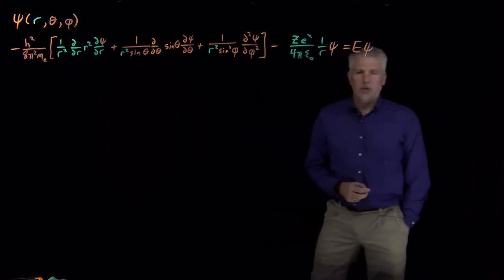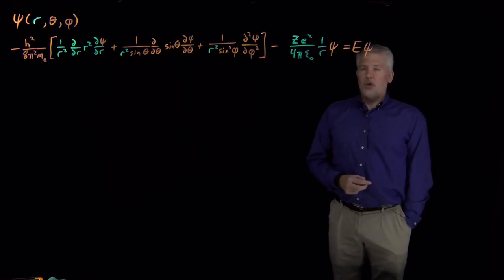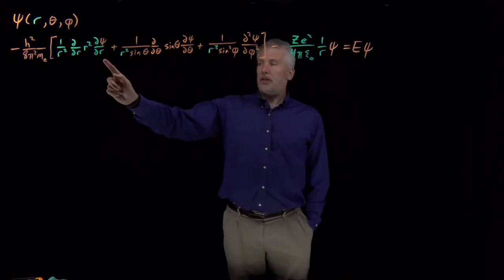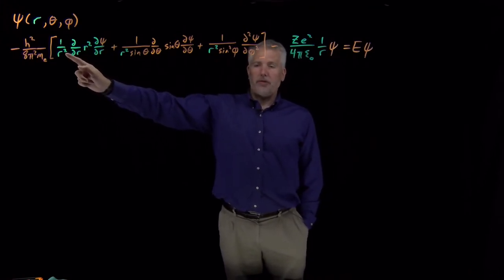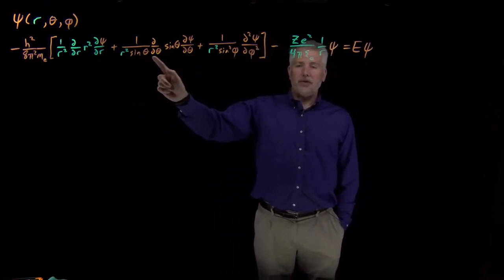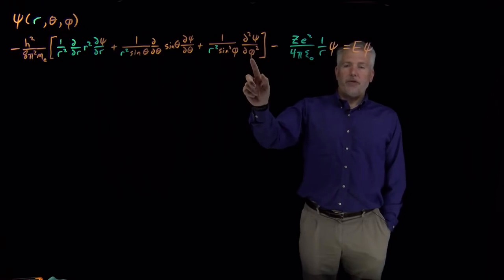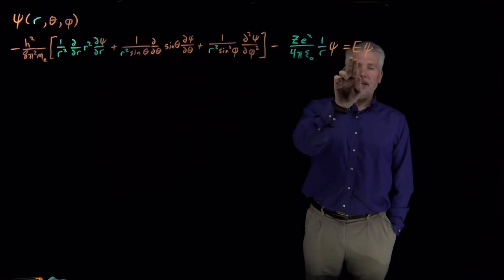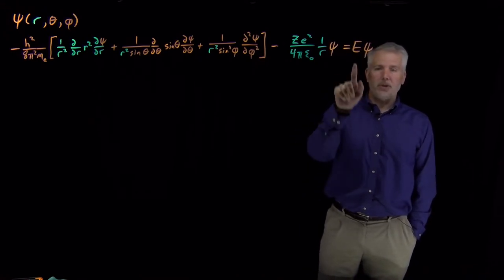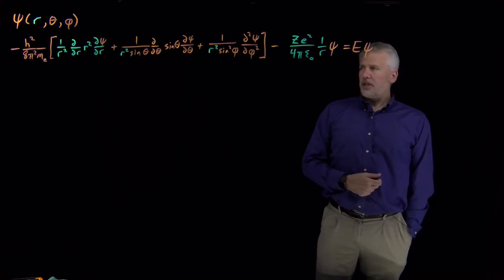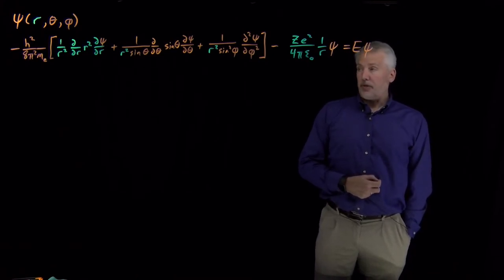The question is how do we solve this Schrödinger equation? We're looking for a wave function such that if we take the r derivative, multiply by r², take another r derivative, divide by r², do operations with theta and phi derivatives, and add in potential energy times the wave function, we get back the original wave function multiplied by a constant — the energy. Solving this differential equation is not trivial, but it's certainly possible.